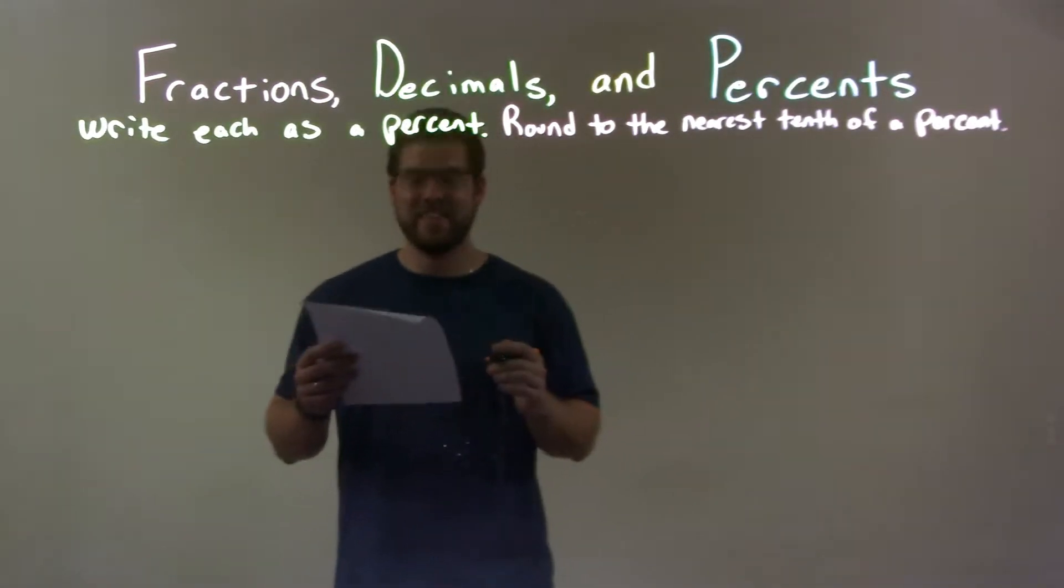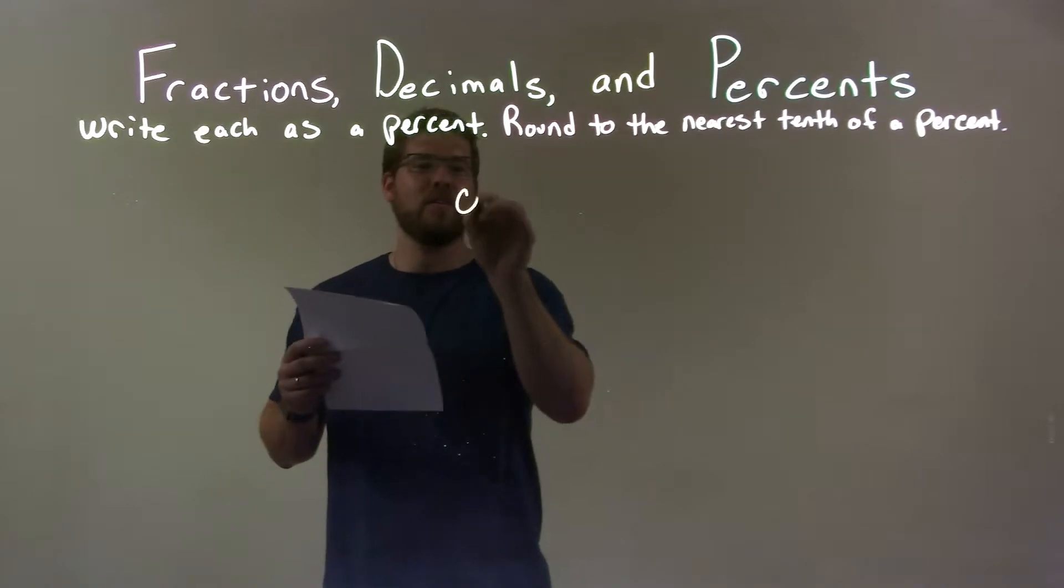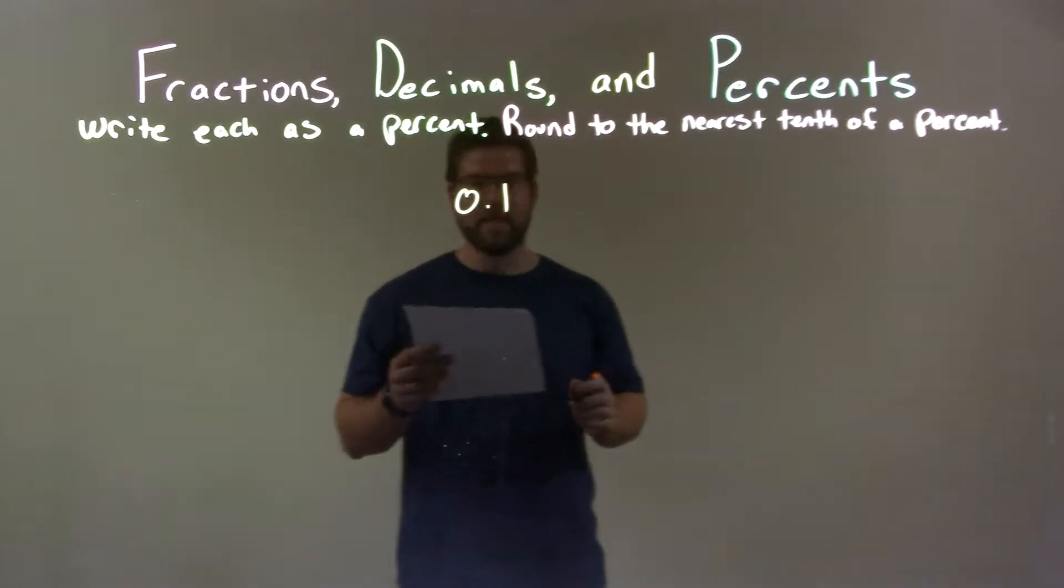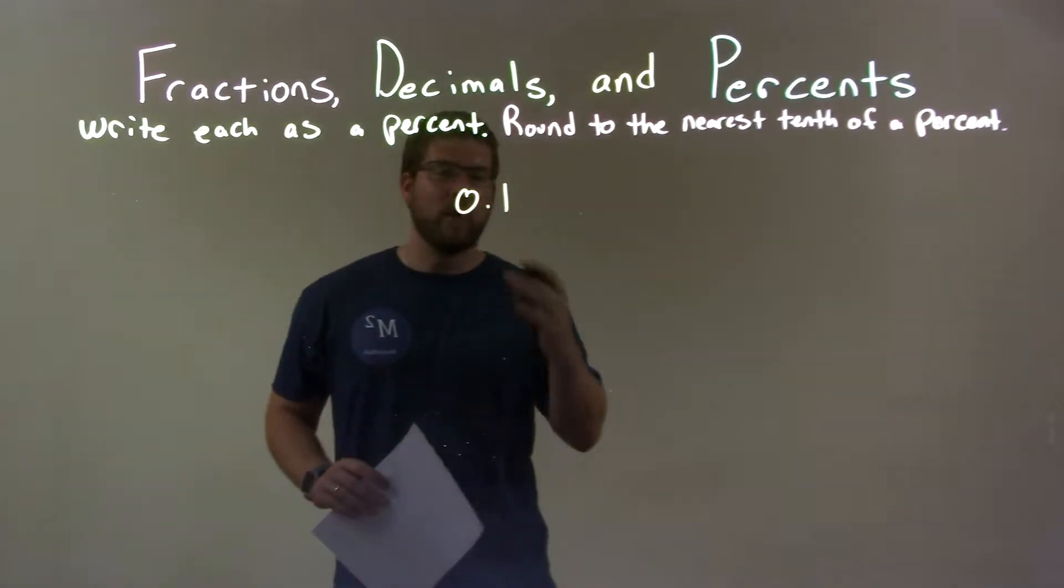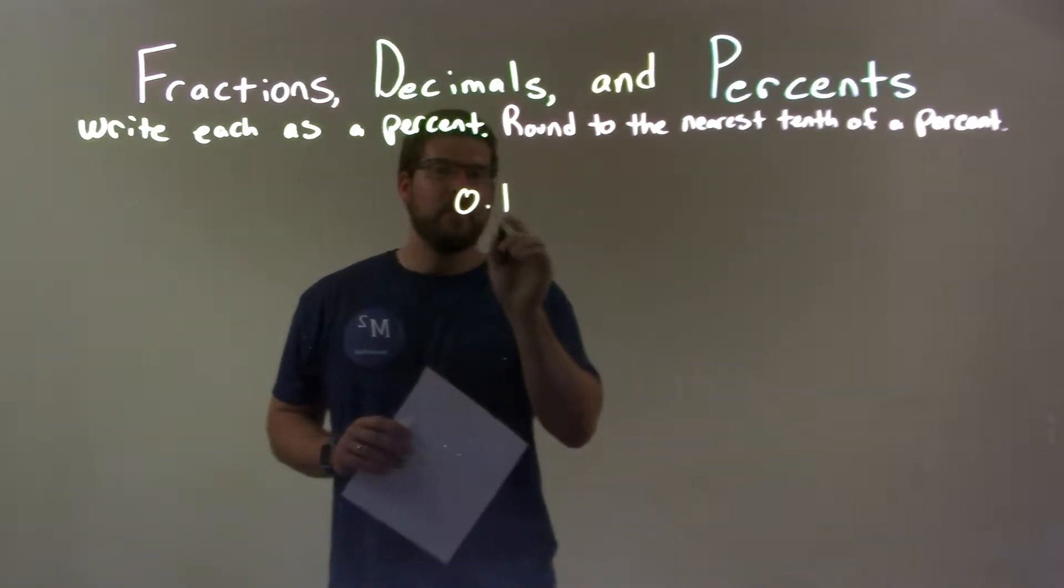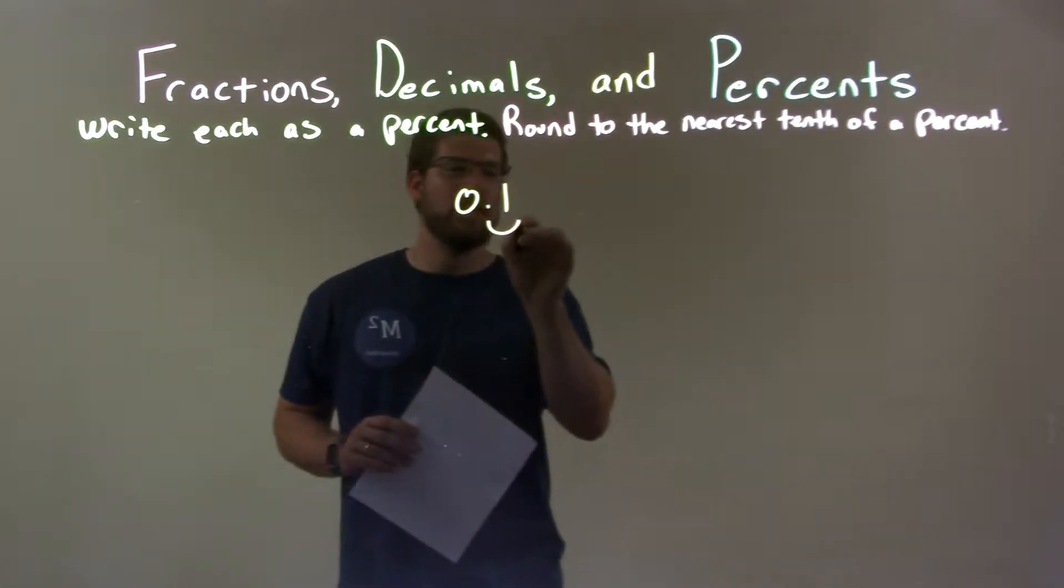So if I was given this decimal, 0.1, well 0.1 to write that as a percent, I take that decimal and I have to move two spots to the right. One, two.